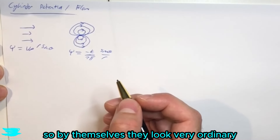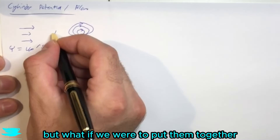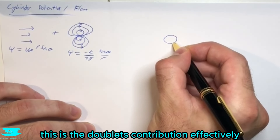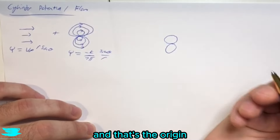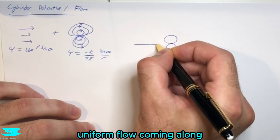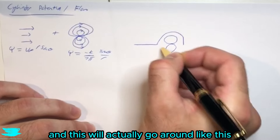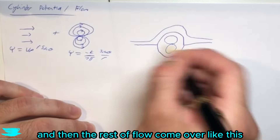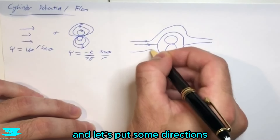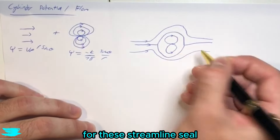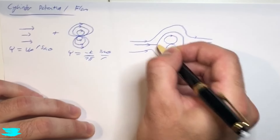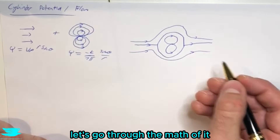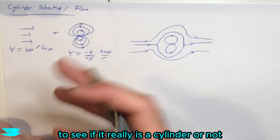By themselves these two flows look fairly ordinary, but what if we were to put them together? We would get something that looks like a cylinder. We'll have a point in the middle where the flow comes out — that's the doublet's contribution at the origin. Then we have the uniform flow coming along, which divides and goes around, and the streamlines form a shape that already looks like a cylinder. Let's go through the math to confirm it really is a cylinder.